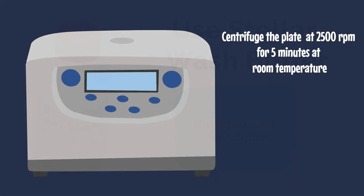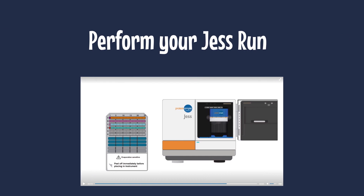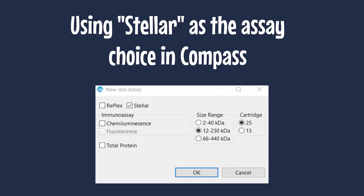Centrifuge the plate at 2500 RPM for 5 minutes at room temperature. Perform your JESS run as usual, using Stellar as the assay choice in Compass.